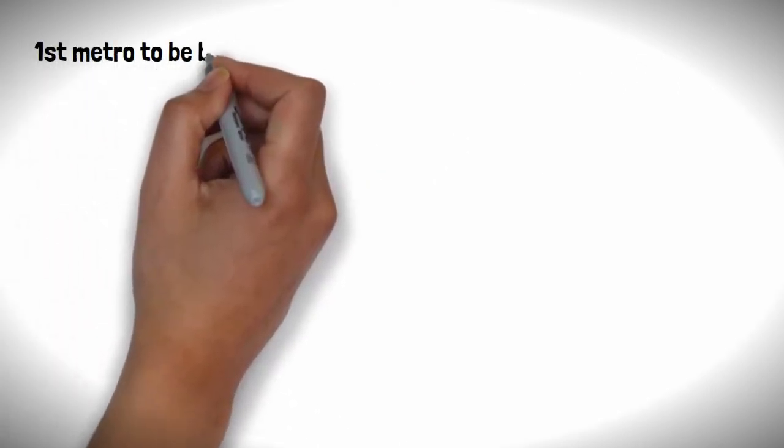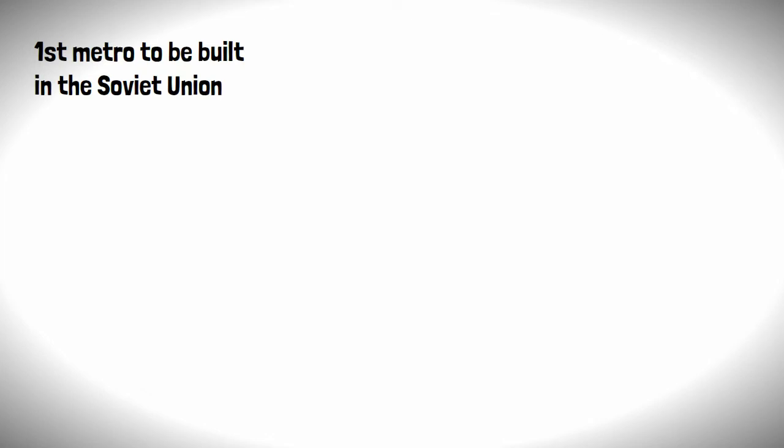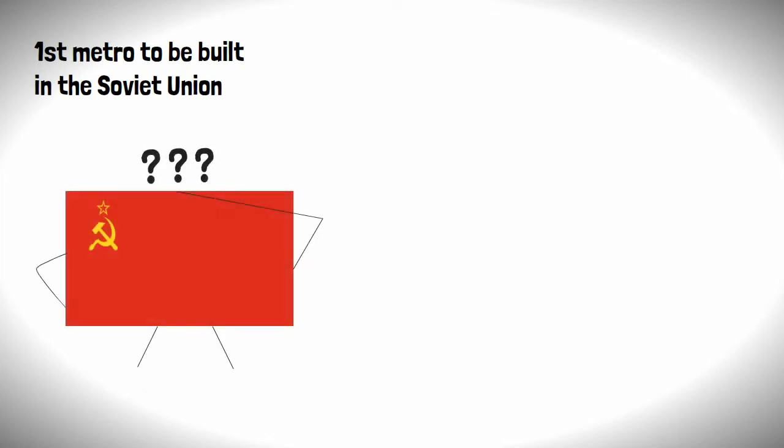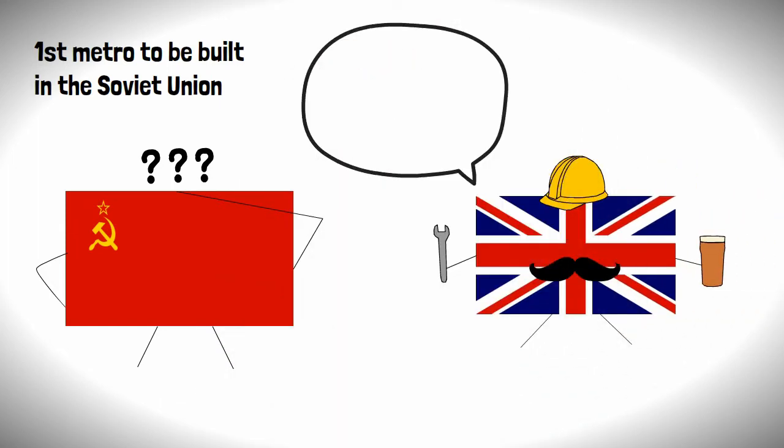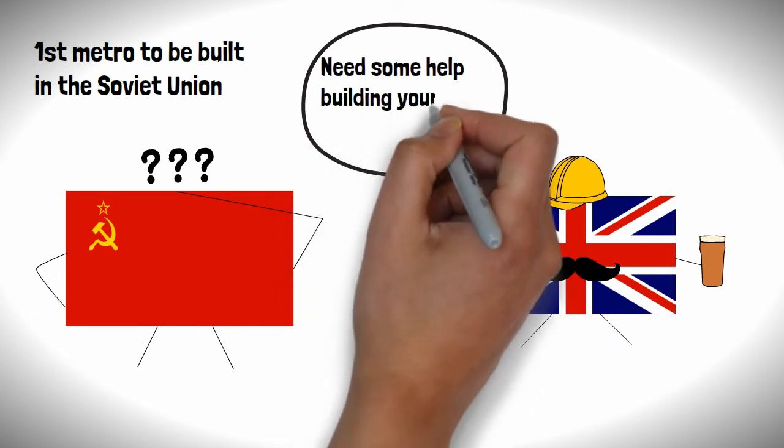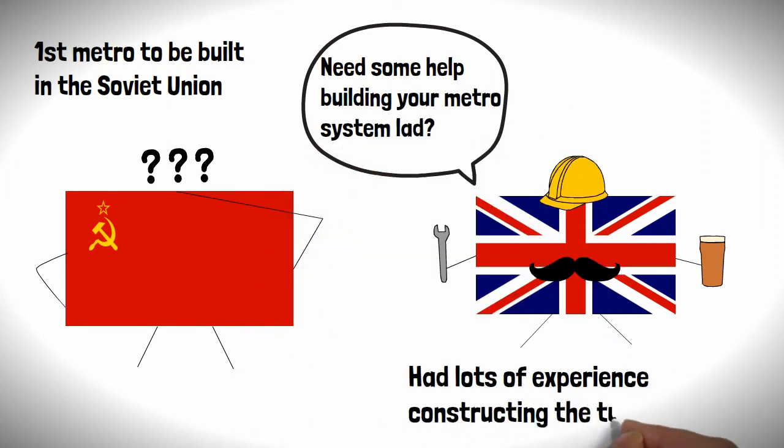As this was the first metro system to be built in the Soviet Union, knowledge and experience about designing such a system within the nation was very much lacking. The result of this led to the Soviets calling upon its old capitalist pal Britain to help a comrade out by providing engineering expertise, which they had bags of constructing the tube in London.